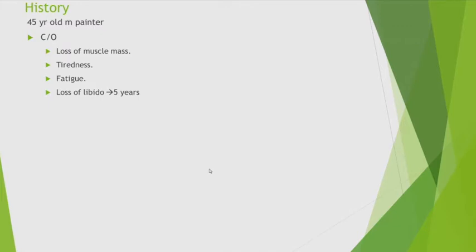So the possibilities mentioned are: chronic malnutrition or chronic illness, tuberculosis, autonomic dysfunction, cardiac — mitral stenosis — and myasthenia gravis as a neurological cause of fatigability. Let's move forward to examination findings.